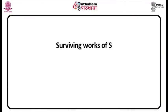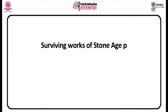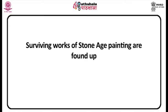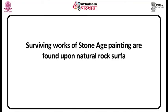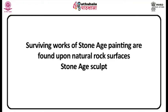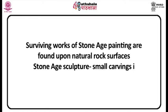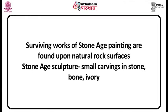Recognizable art dates from at least 30,000 BC in Europe, Africa, Australia, and South America. Surviving works of Stone Age painting are found upon natural rock surfaces, while Stone Age sculpture is represented mainly by small carvings in stone, bone, ivory, and clay.